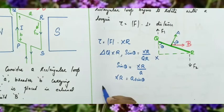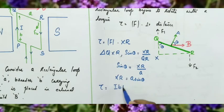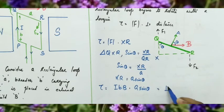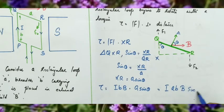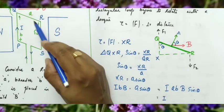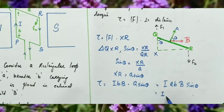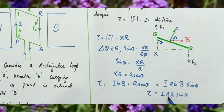Substituting in the torque formula: torque equals magnitude of force IBB times A sinθ, which gives I·A·B·B sinθ. Since A×B is the area of the rectangular loop, the torque simplifies to τ = IAB sinθ.